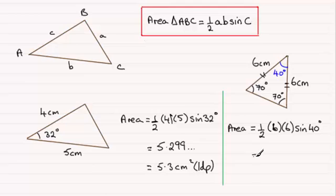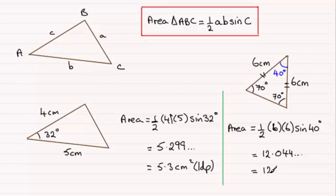Working this out, you should find you get 12.044 and so on. Rounding this to one decimal place, it's going to be 12.0 cm² to 1 decimal place. So a very useful formula when you know two sides and an included angle.